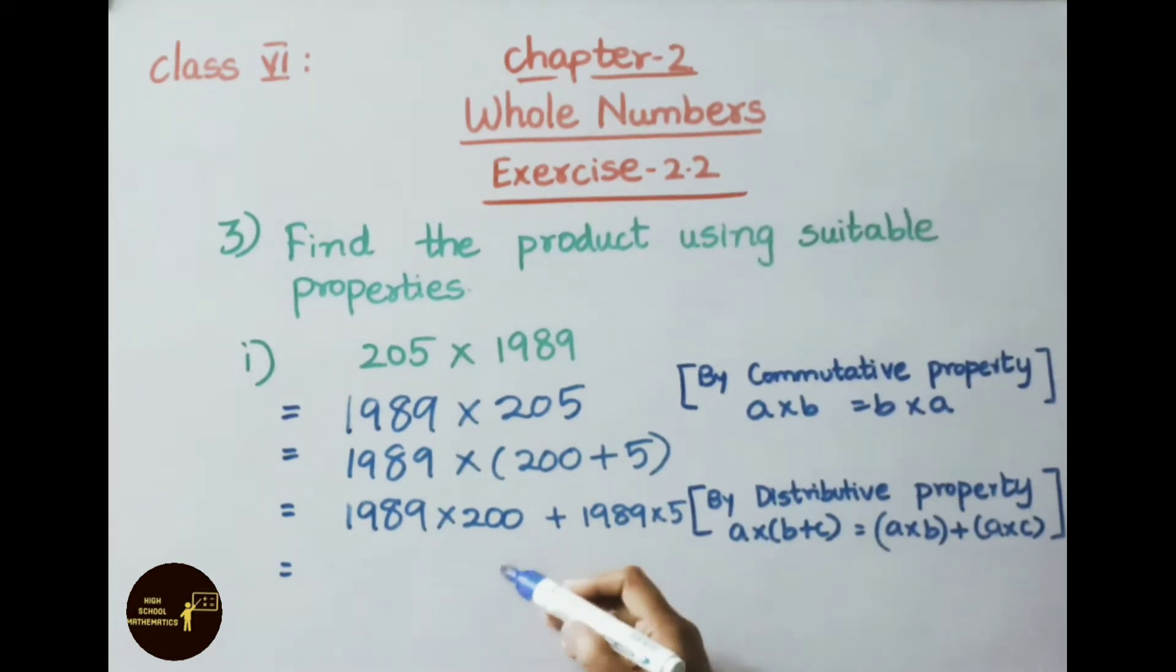1989 into 200. Write down these two zeros. Two nines are 18, 8 carry one. Two eights are 16 plus 1 is 17, 7 carry one. Two nines are 18 plus 1 is 19, so 9 carry one. Two ones are 2 plus 1 is 3. We got answer 397,800.